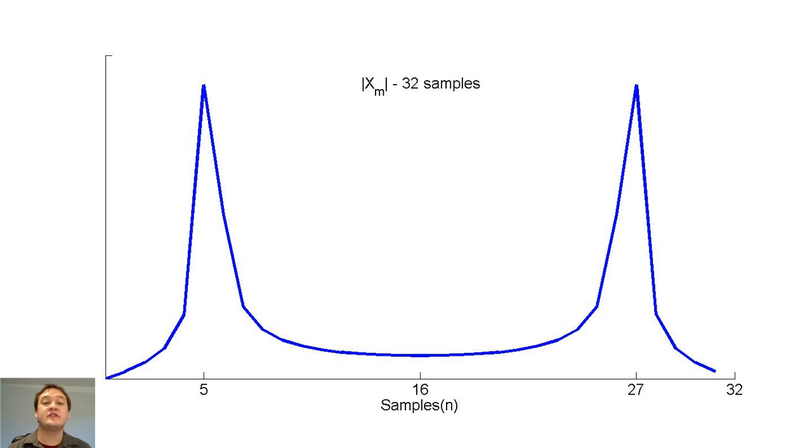Notice how the DFT is no longer a perfect impulse function. Also, notice that the peak at sample 5 corresponds to positive omega naught, and the peak at sample 27 corresponds to negative omega naught.